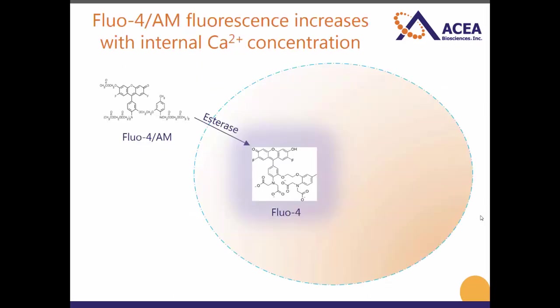Fluo-4 AM is a calcium indicator that is used to measure calcium flux both by flow cytometry and confocal microscopy. It's an AM ester derivative of Fluo-4 and is converted into the fluorescent Fluo-4 after diffusion into the cell. Upon binding to calcium, Fluo-4 fluorescence increases more than a hundred fold which can rapidly be quantified by flow cytometry. Emission for the calcium-bound Fluo-4 can be detected with standard FITC filters.